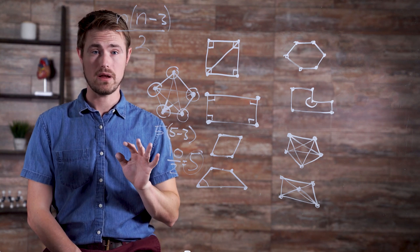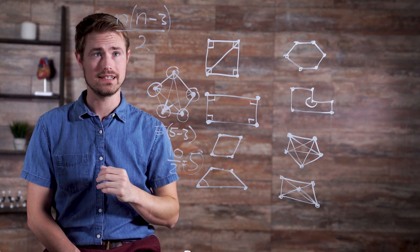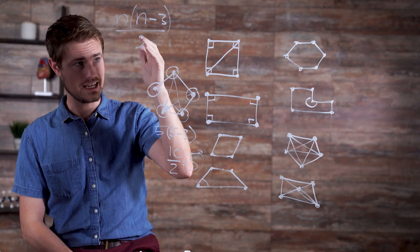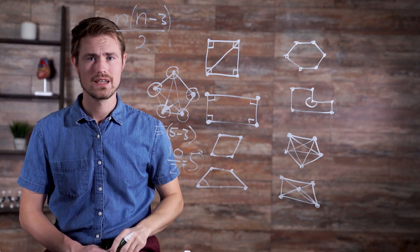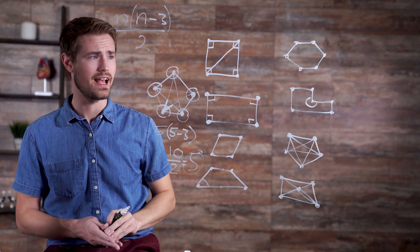Therefore, for any size polygon, our equation can be written as this: N times, parentheses, n minus three, all over two, or divided by two. Conceptually, this can be remembered as...